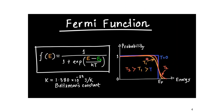At T = 0 K, half of the states are filled. If we put this value into the function at T = 0, it gives 1/2. If we increase the temperature, some electrons can go to higher energy states. As temperature increases from T1 to T2, the curve shifts and some electrons can go to the conduction band as well.